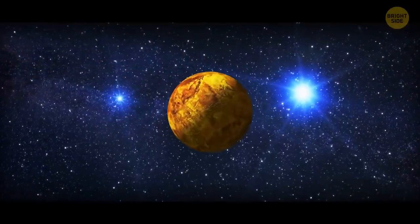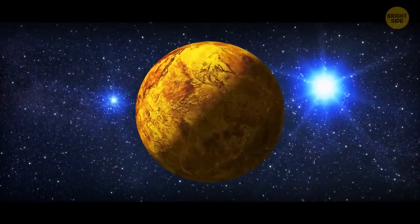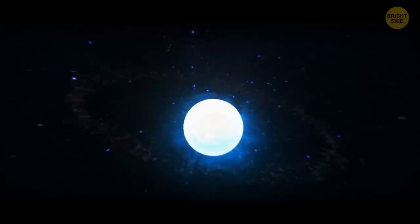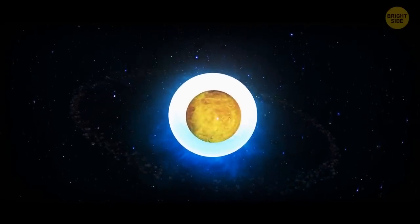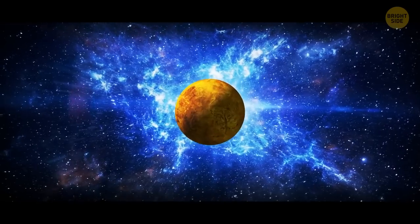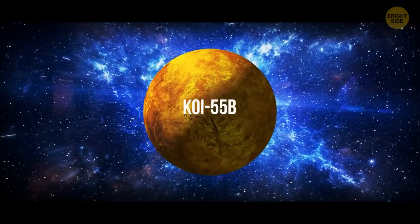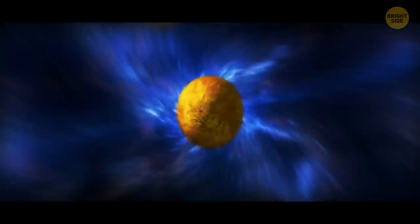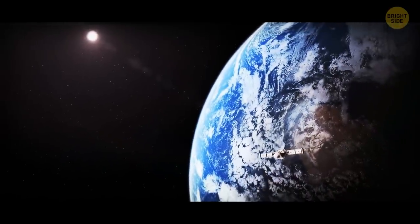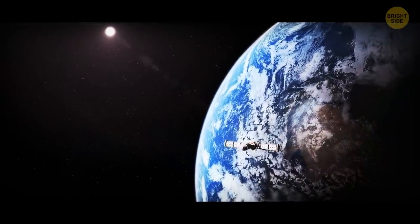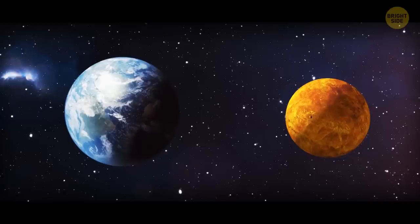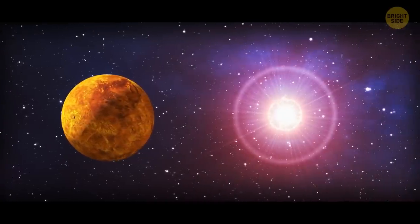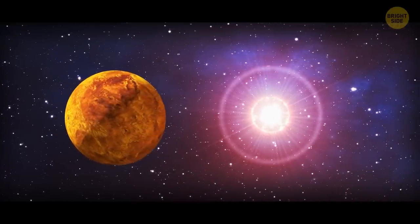The next planet is actually really strange. It didn't just revolve around its star. It lived inside the star. This cosmic miracle is called Koi 55b, or Kepler 70b. This planet is very far away from us. 4,000 light years. It would take about 70 million years on a spaceship. It's twice as light as Earth, and fully rotates around its star in just a couple of hours.